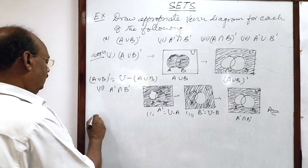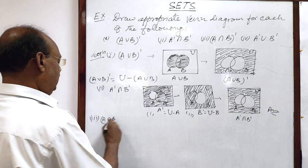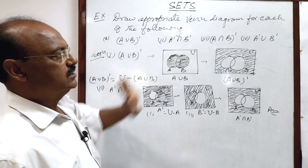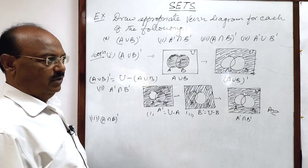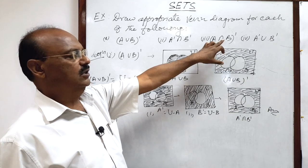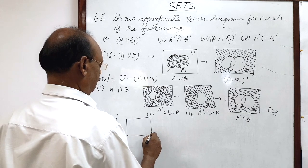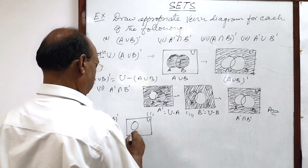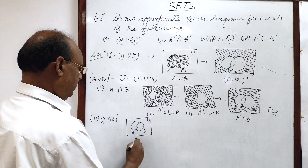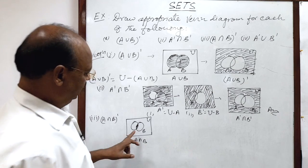Now, let us see the third part of this question, which is A intersection B whole complement. First of all, we will find A intersection B here. This is the universal set, this is set A, and this is set B. A intersection B means the common area — this shaded portion is A intersection B.